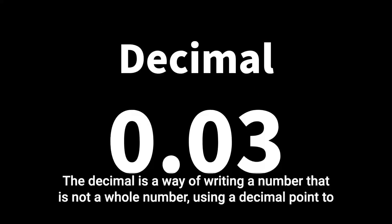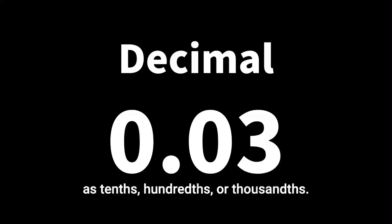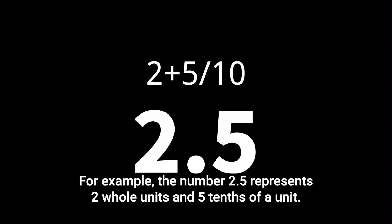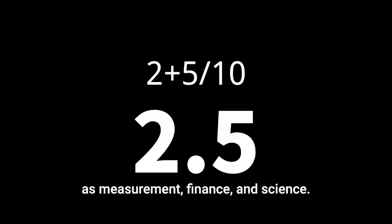A decimal is a way of writing a number that is not a whole number, using a decimal point to separate the whole part from the fractional part. The decimal point is used to indicate a place value that is less than one, such as tenths, hundredths, or thousandths. For example, the number 2.5 represents two whole units and five-tenths of a unit. Decimals are used in many different areas of math and everyday life, such as measurement, finance, and science.